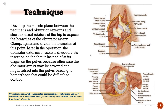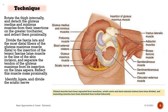Later in the operation, the obturator externus muscle is divided at its insertion on the femur instead of at its origin on the pelvis, because otherwise the obturator artery may be severed and might retract into the pelvis, leading to hemorrhage that could be difficult to control. Rotate the thigh internally and detach the gluteus medius and minimus muscles from their insertions on the greater trochanter, and retract them proximally.